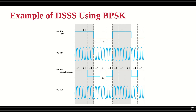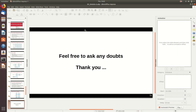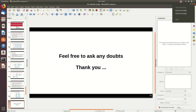At the receiver side, using the same code, the signal is multiplied again to get the original signal back, and then the BPSK demodulator recovers the original data. The previous digital example is more straightforward to follow, but both represent the same concept: the same bit is spread over multiple bits with the help of the pseudo-random number generator. That is the idea of direct sequence spread spectrum.